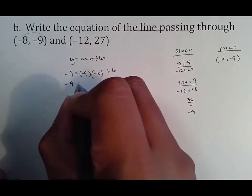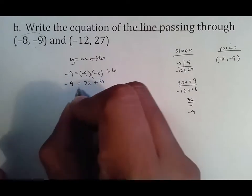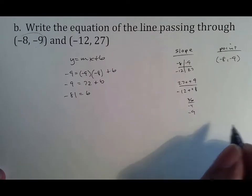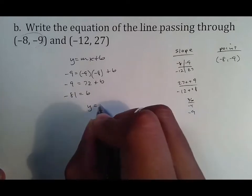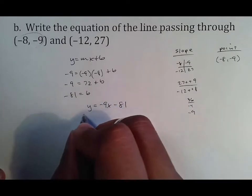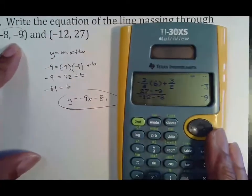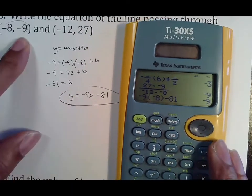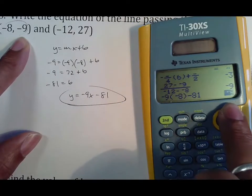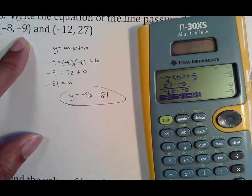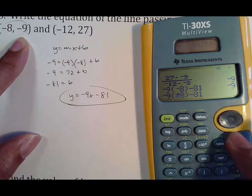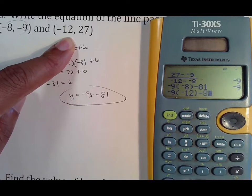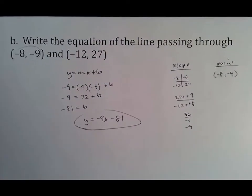Now plug in: y = −9, m = −9, x = −8, plus b. So −9 = (−9)(−8) + b = 72 + b. Subtract 72: b = −81. The equation is y = −9x − 81. Check with point (−8, −9): −9(−8) − 81 = 72 − 81 = −9. Then check the second point (−12, 27): −9(−12) − 81 = 108 − 81 = 27. Both work — you can hand it in confidently.